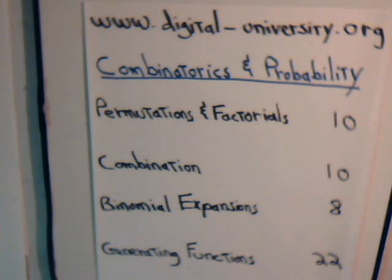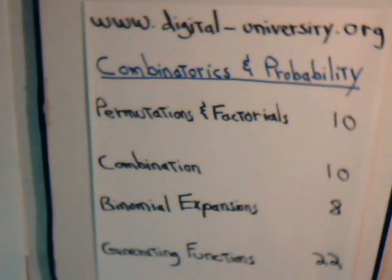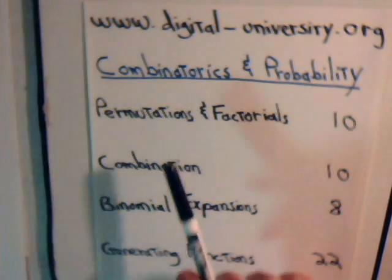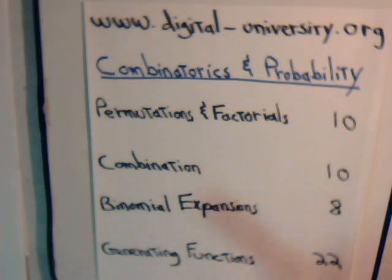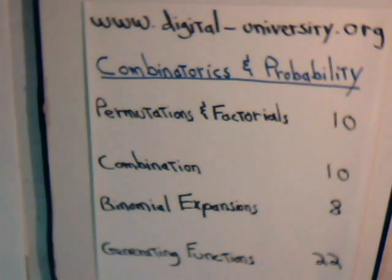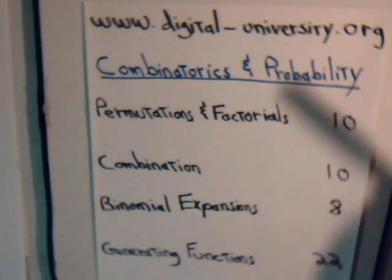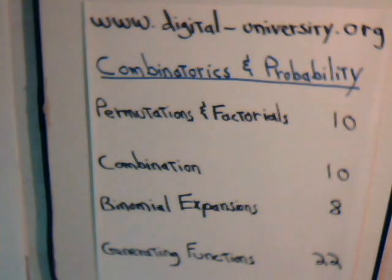This is our fourth video in our series on solving probability problems. At the website digital-university.org there's a whole series of videos where we solve different types of permutation problems and also different types of combination problems. We draw upon the knowledge from those earlier videos for a lot of the probability problems. If you go to the website and click on the Combinatorics and Probabilities section, you'll find the earlier videos we were referring to.